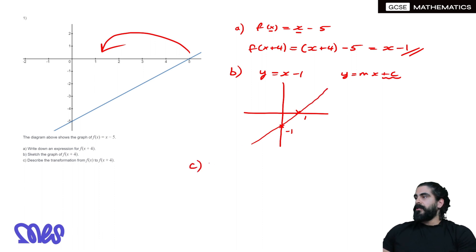Now for part c, for descriptions of shifts, you can't say shift—that's the informal way. It's a translation, and any object moving left, right, up, or down is by a vector.